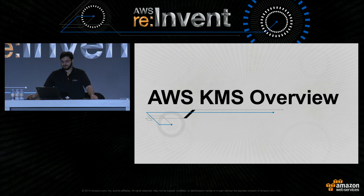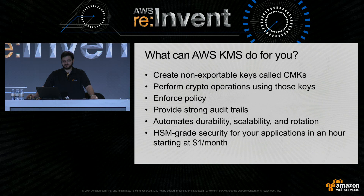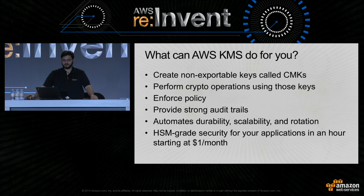The Key Management Service creates a new resource type called the customer master key, or CMK — a regional resource. It performs cryptographic operations for you using customer master keys, and enforces policy on every operation. Customer master keys have a key policy analogous to S3 bucket policies that applies to all operations. It provides audit records through CloudTrail of every operation that ever happened under your customer master key, and automates durability, scalability, and rotation. You get HSM-grade security for your applications in about an hour, starting at about a dollar a month plus three cents per 10,000 operations.